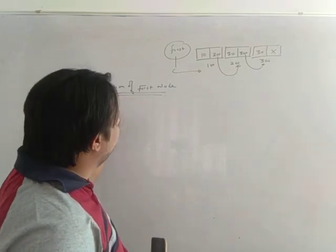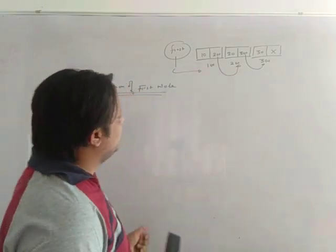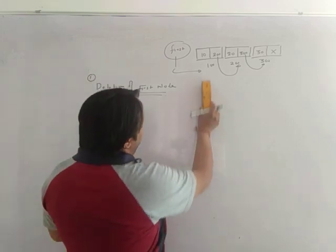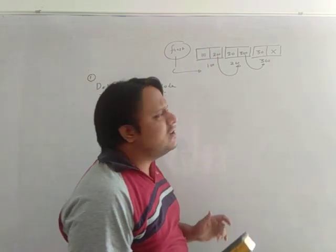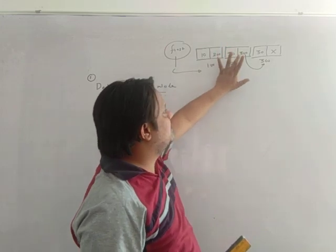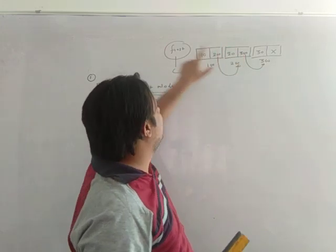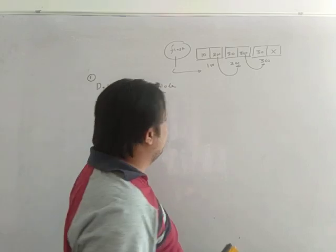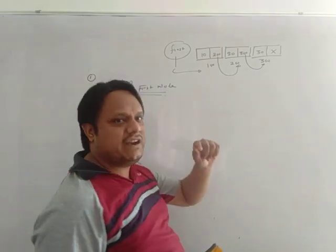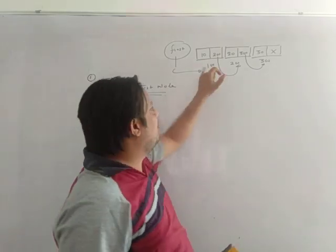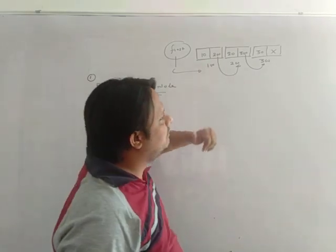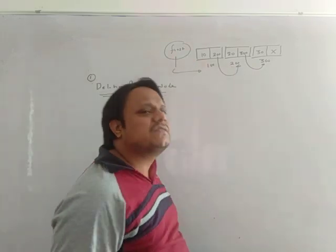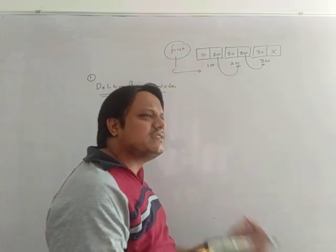In this program we are going to delete the first node. The theoretical concept is: if I delete the first node, then the next node becomes my first node. So the first pointer should always point to the first node of the linked list. We will take a pointer, assign the address of the first node to that pointer, free that pointer, and move first to the address of the second node. A very simple program.